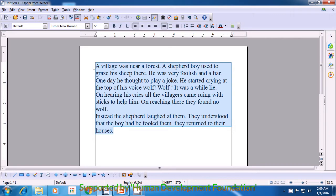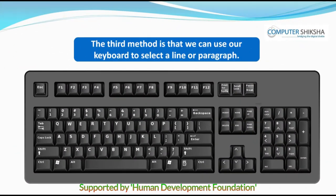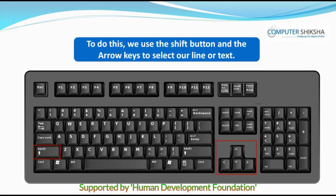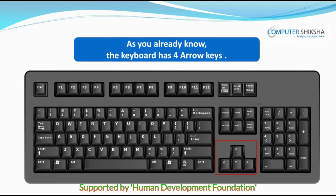Click with the left button of the mouse or the touchpad once and it gets unselected. The third method is that we can use our keyboard to select a line or paragraph. To do this, we use the Shift button and the arrow keys to select our line or text. As you already know, the keyboard has four arrow keys.